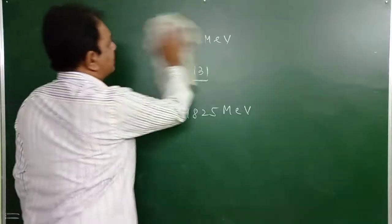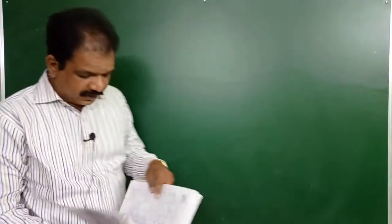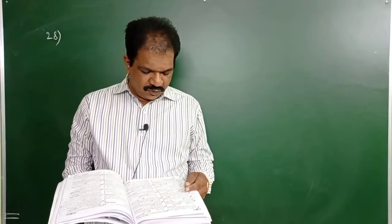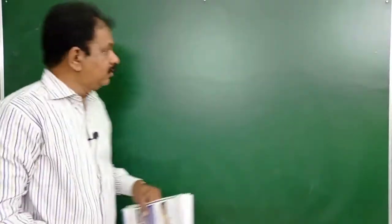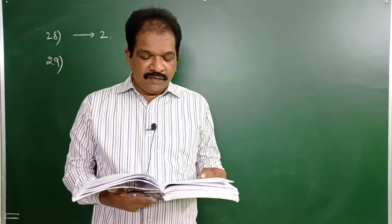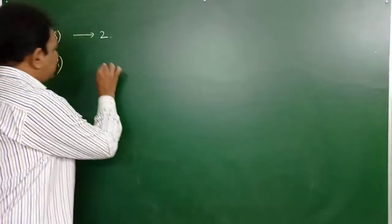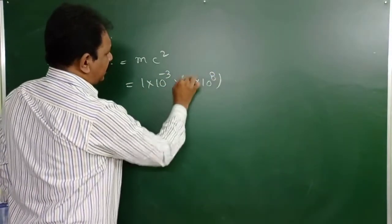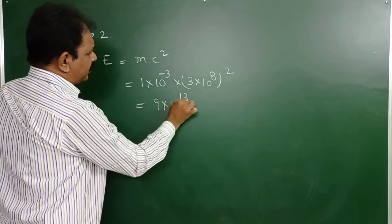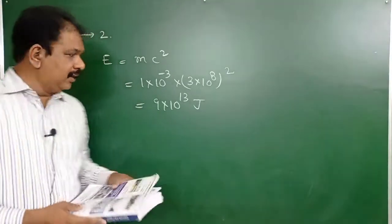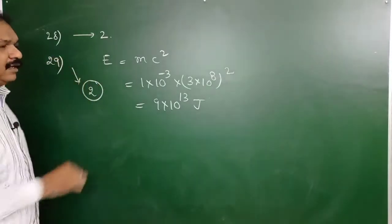Question 28: In a nuclear reactor, the function of the moderator is to decrease the speed of the neutrons. Answer is 2nd option. Question 29: Energy equivalent to a substance of mass 1 gram. E = mc² = 10⁻³ × (3×10⁸)² = 9×10¹³ joules. Answer for question 29 is 2nd option.